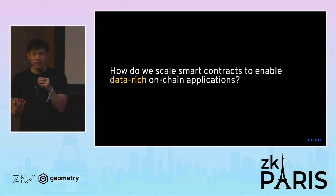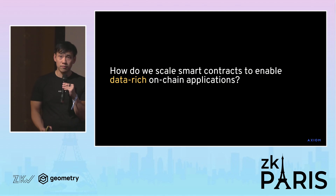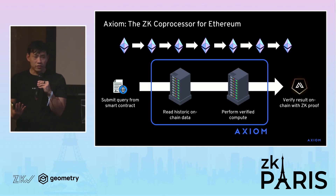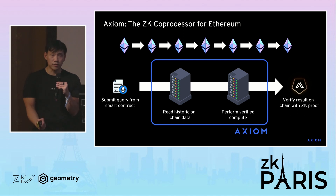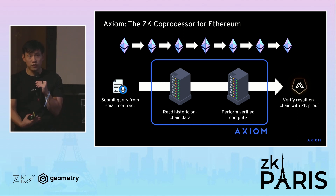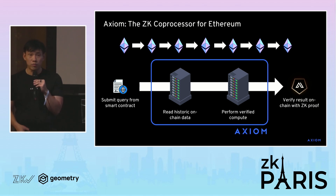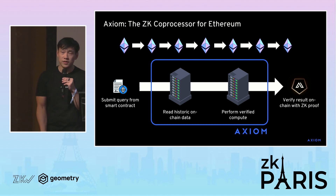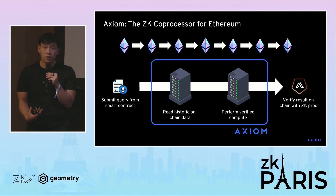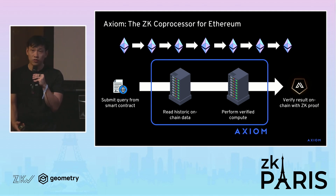The question we asked at Axiom is: how can we scale smart contracts to enable more data-rich, on-chain applications? Our answer is to use something we're calling a ZK coprocessor. We allow smart contracts to query into Axiom to do two things: first, to read historic on-chain data; and second, to do some verified computations on top of that data. After we do both of those things, we generate a zero-knowledge proof that the result was computed correctly, verify the proof on-chain, and deposit the result in a smart contract for any other application to use.